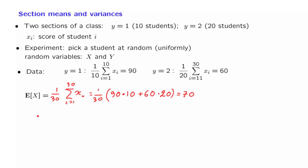Now let us look at conditional expectations. If Y is equal to 1, this means that a student from section 1 was picked. And within that section, each student is equally likely to be picked, so the outcome of this random variable is equally likely to be any one of these x_i's. Each x_i gets picked with probability 1 over 10, and so the expected value of this random variable is 90. Similarly, for the second section, the expected value of the score of a randomly selected student, given that the student belongs in that section, is equal to 60.